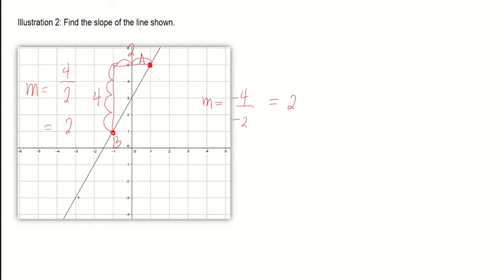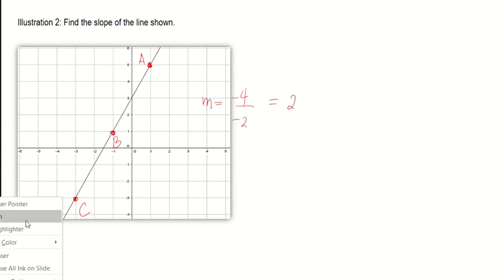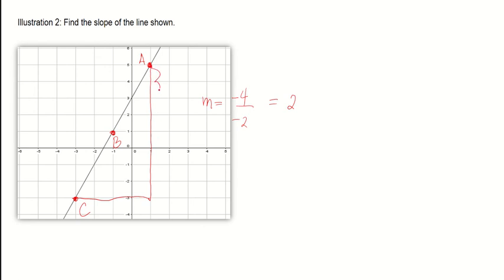What if we use point C? With points A and C, draw a right triangle from point A going to point C. Count the rise: eight units going down — so it's negative eight. The run from this point going to point C: four units going to the left — so it's negative four. The slope is negative eight divided by negative four, which is still positive two.